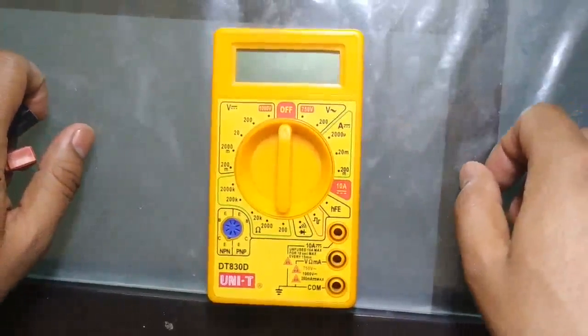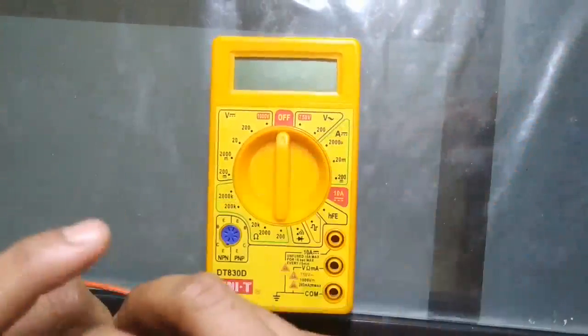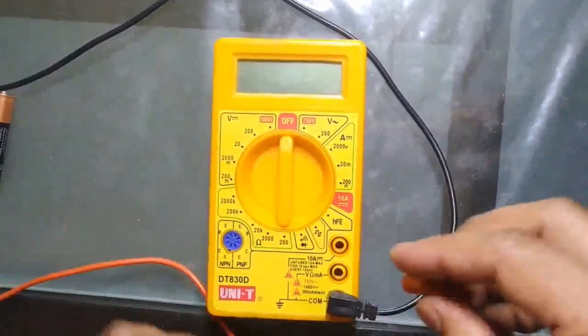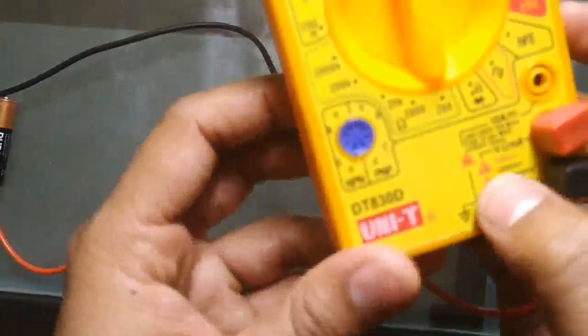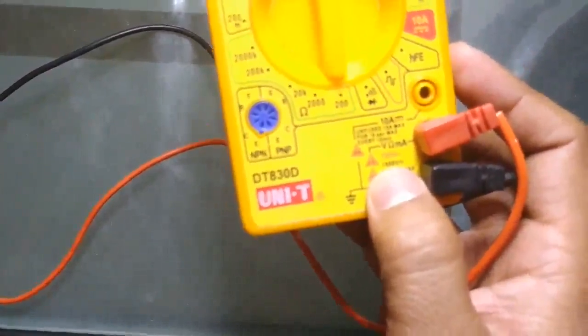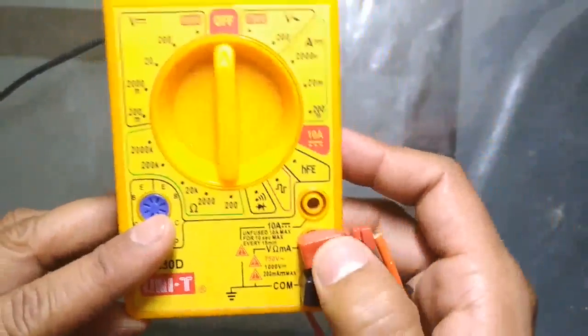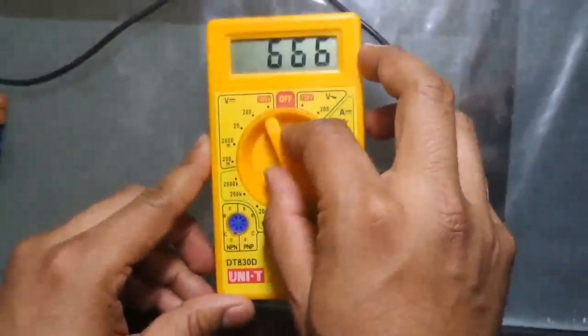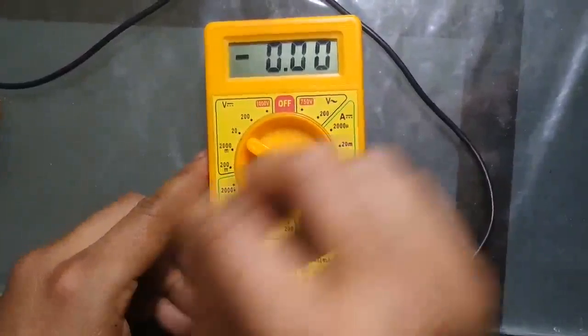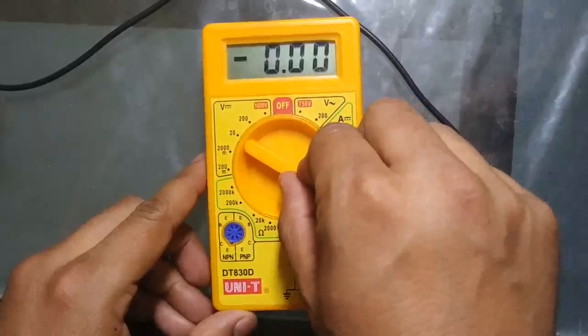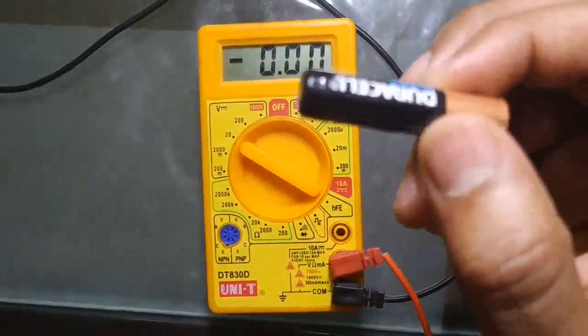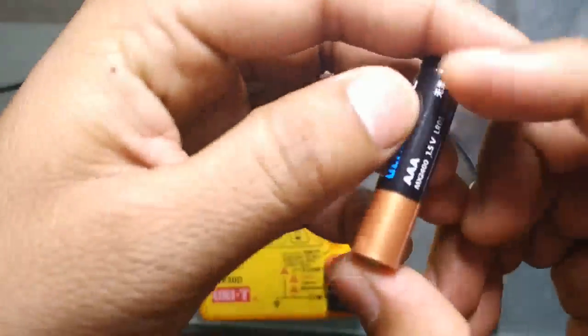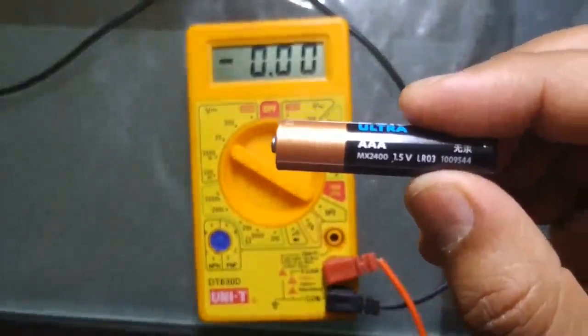We measure DC voltage by using a multimeter. First, we connect these two probes - the black probe is connected to COM, and the red probe is connected to this port, which indicates V, ohm, and ampere. Now select the range of DC voltage measurement. Here is a general purpose battery used in homes. This battery voltage is 1.5 volts.